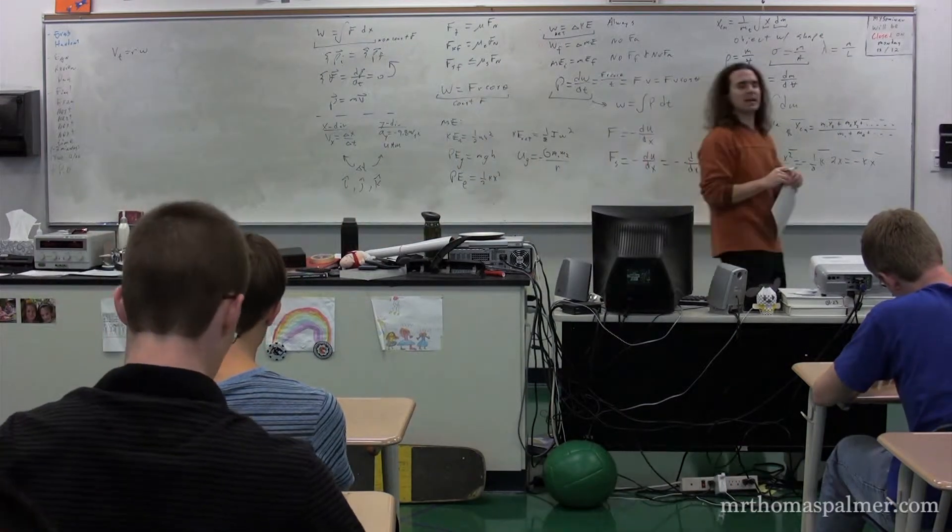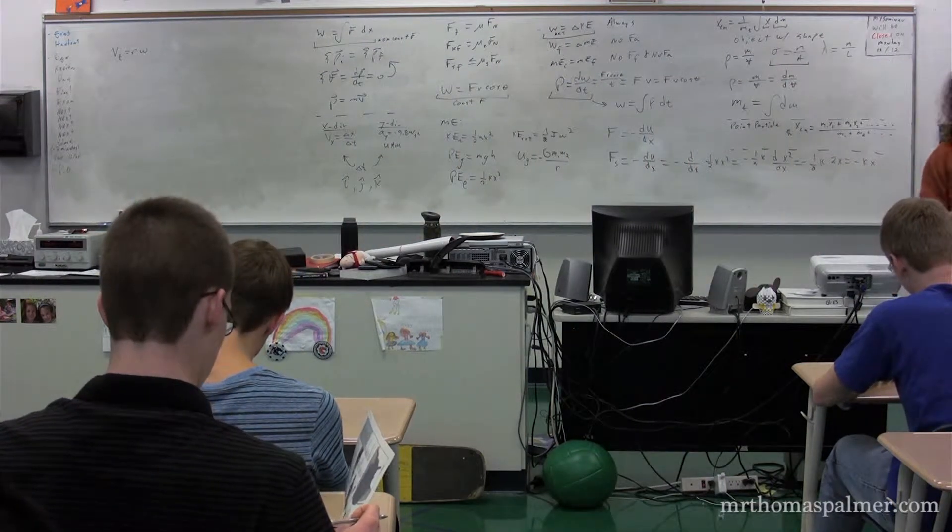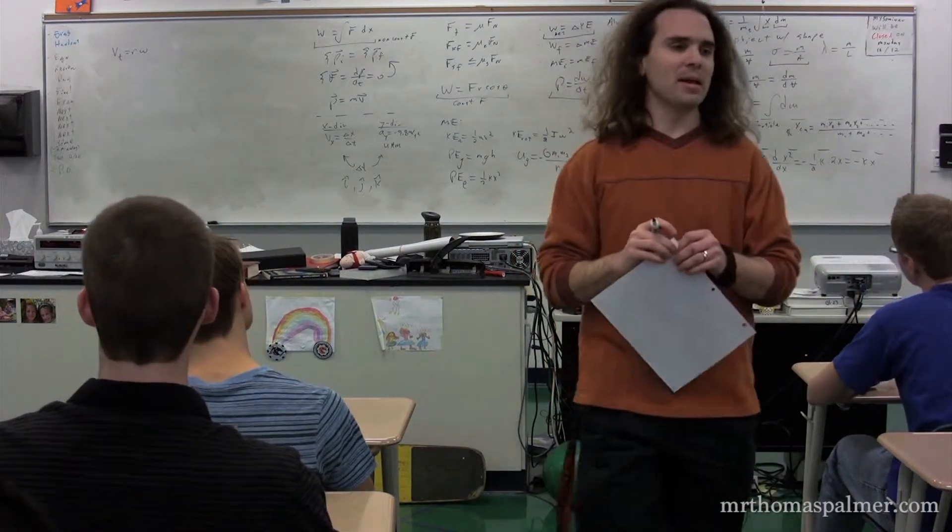Vt equals r times omega. V sub t, tangential velocity, equals the radius times omega.